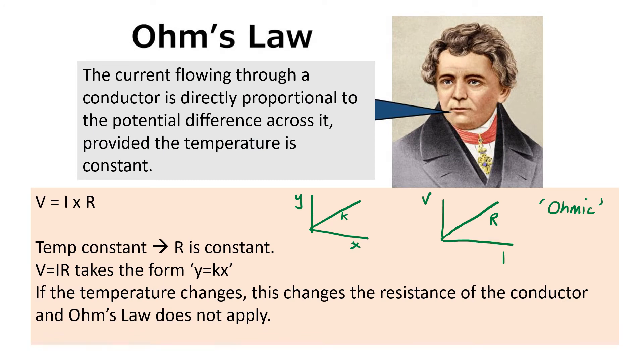Ohm's law tells us that the current flowing through a conductor is directly proportional to the potential difference across it, provided the temperature is constant. That's an important caveat to this law. When the temperature is constant we find the resistance is constant, which means when we increase the potential difference the current increases in proportion to it, and the equation V equals I times R takes the form of y equals kx.